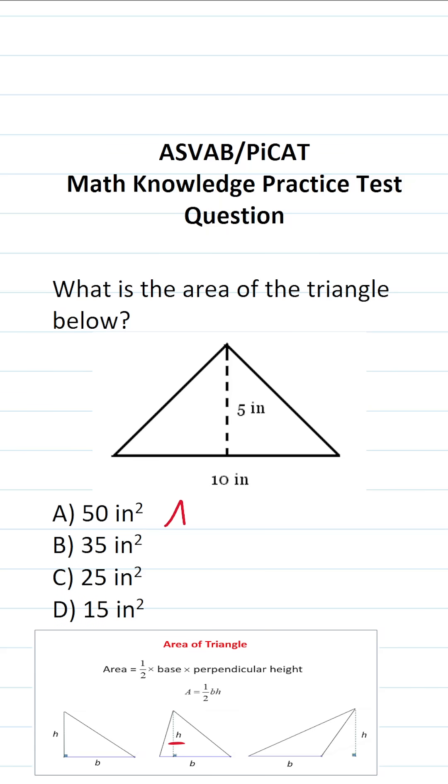Again, on the ASVAB and PiCAT, you're not given a reference sheet or a calculator. For that reason, you have to commit some of these basic formulas to memory, including how to calculate the area of a triangle, which is given by the formula one-half base times height.